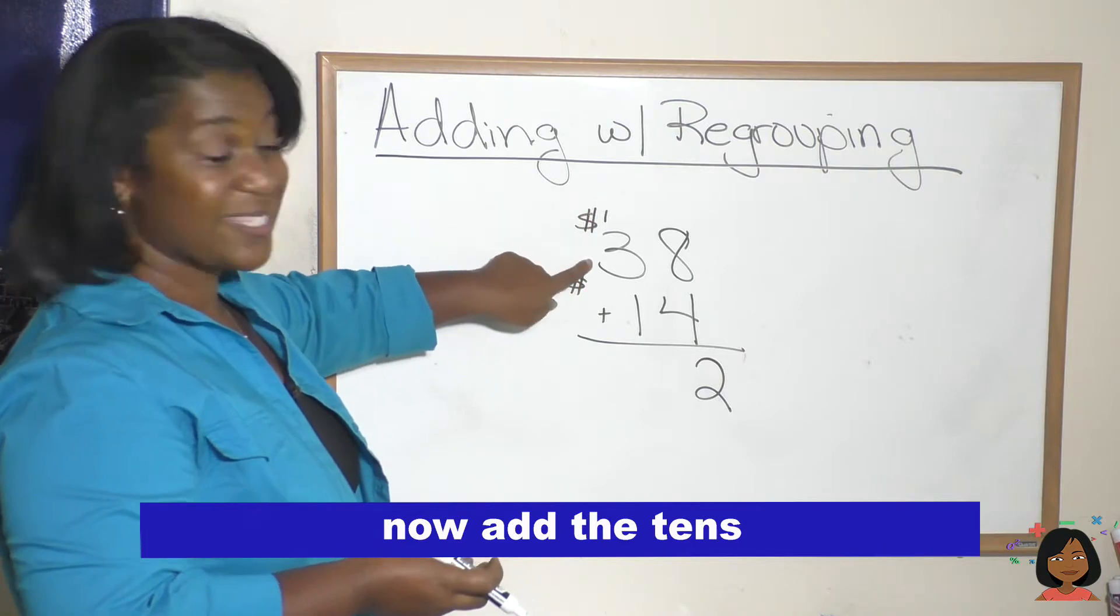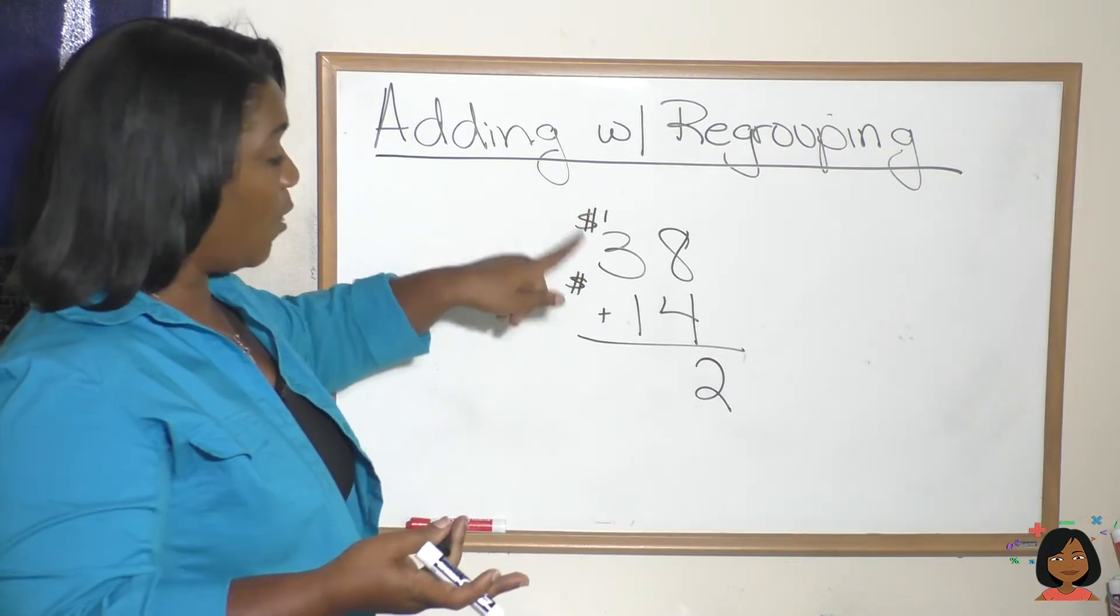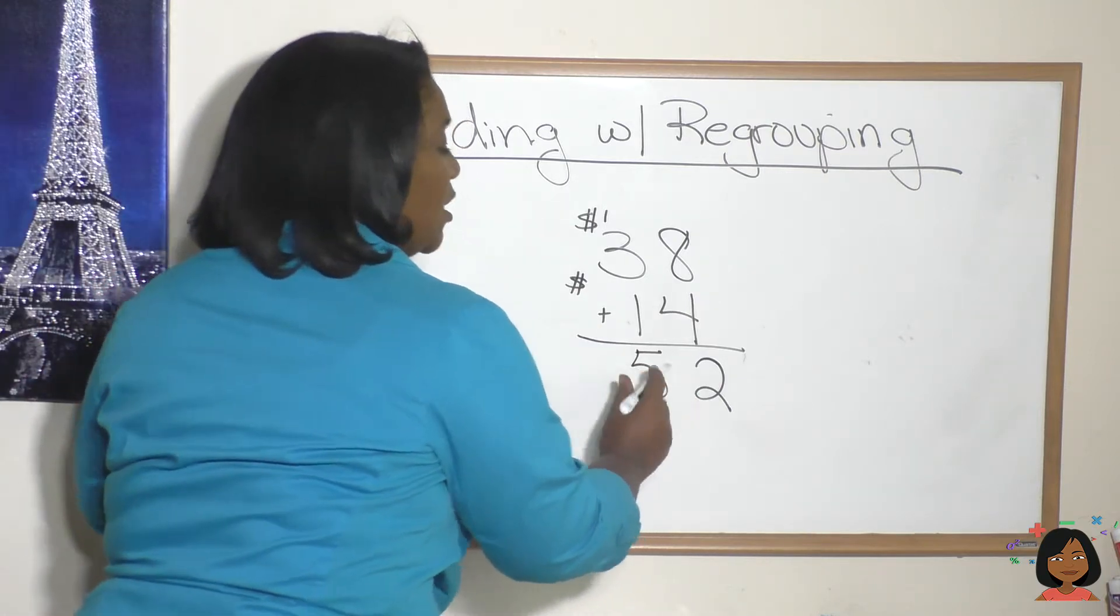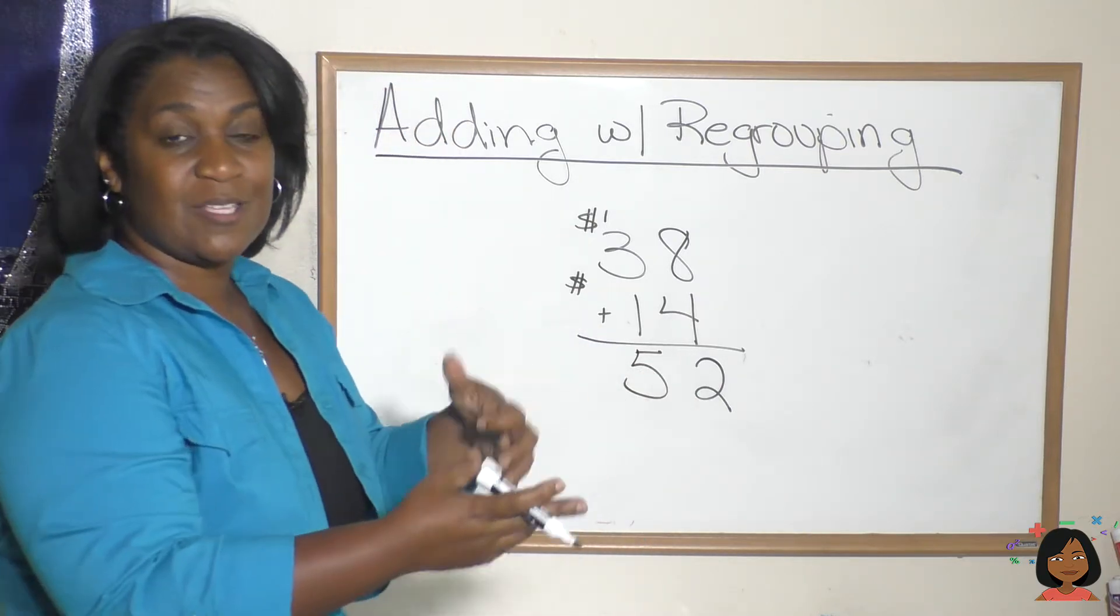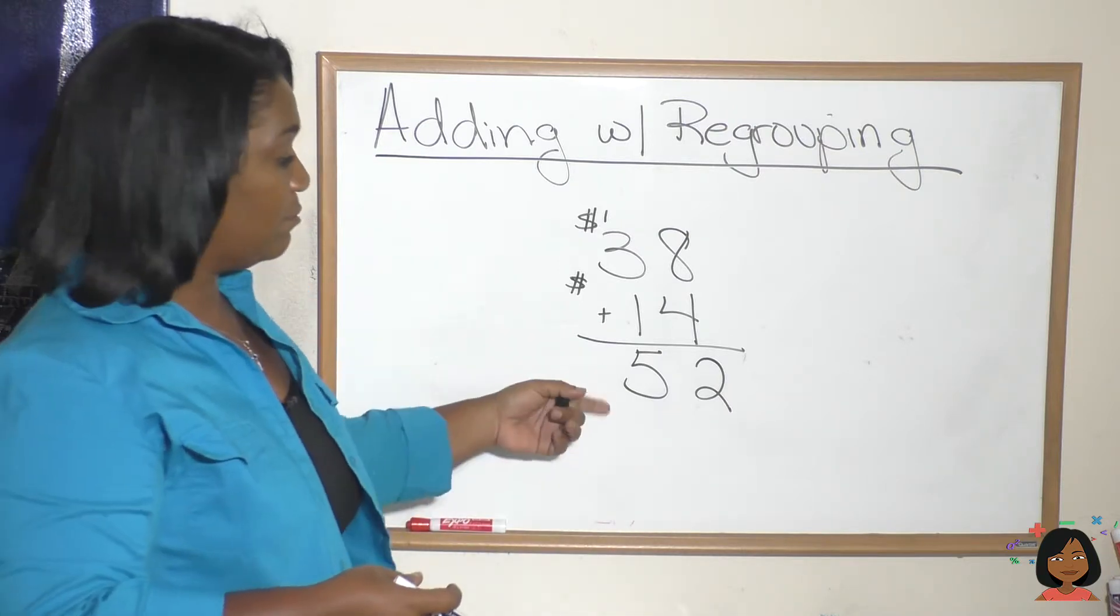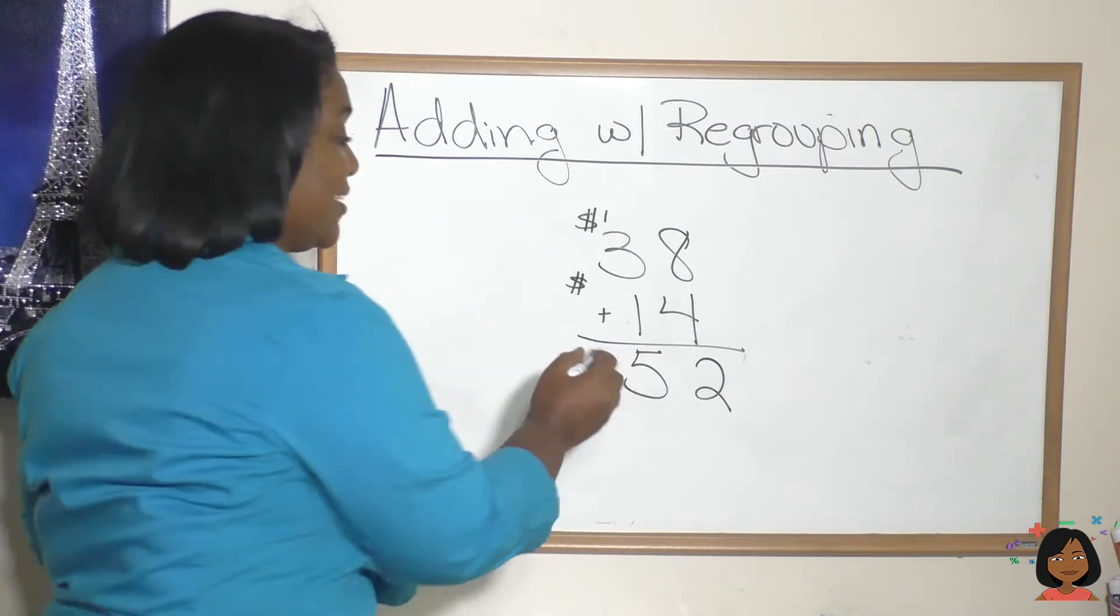We have one plus three is four. Four plus one is five. And all we did is we regrouped our money. So we took some ones and exchanged it for a ten dollar bill. Fifty two dollars is our answer.